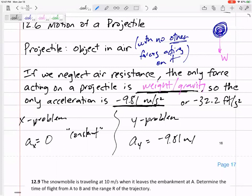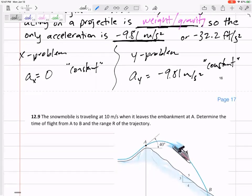negative 9.81 meters per second squared. And that is definitely constant. We're going to assume. We're not going to worry about terminal velocity, air resistance, anything like that. Our acceleration is negative 9.81 meters per second squared, or 32.2 meters per second squared.